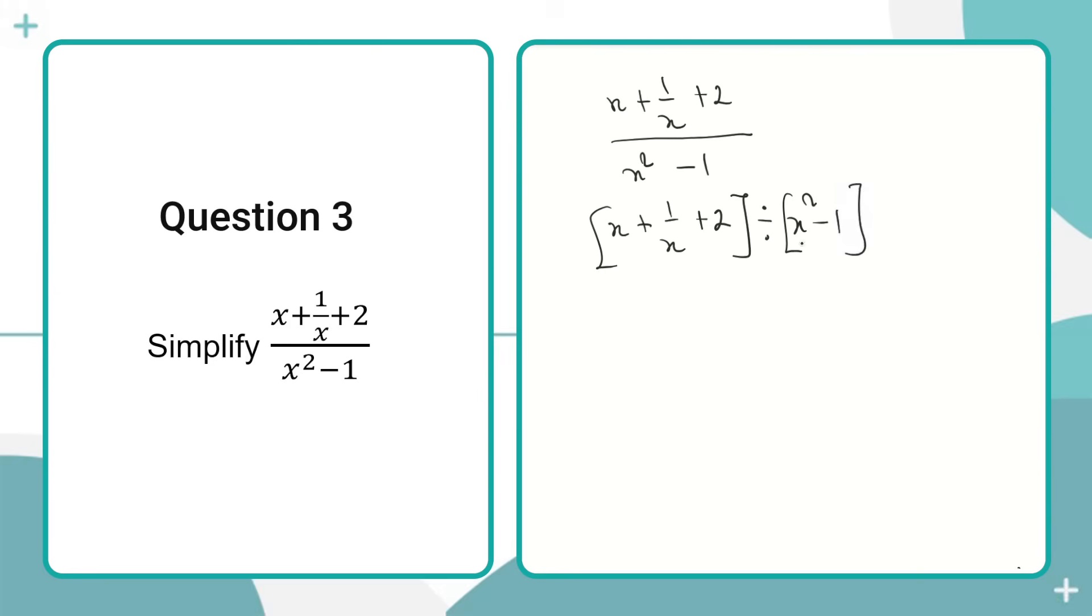When we consider the left-hand side of the expression, we can go through the process of using an LCM. It's just like having a fraction that you want to simplify. The LCM for this fraction should be x. In that case, we would have x multiplying x, which gives us x². Here we would have +1, and over here we would have +2x.